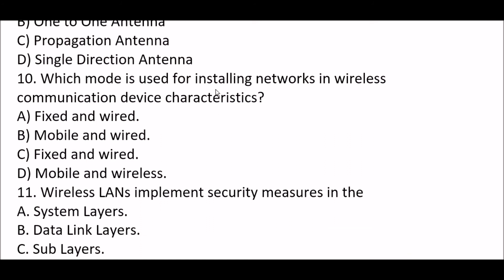Next question: Which mode is used for installing a network in wireless communication device characteristics? Option A: fixed and wired. Option B: mobile and wired. Option C: fixed and wired. Option D: mobile and wireless. The right answer is Option C, fixed and wired. Fixed and wired mode is used for installing networks in wireless communication device characteristics.